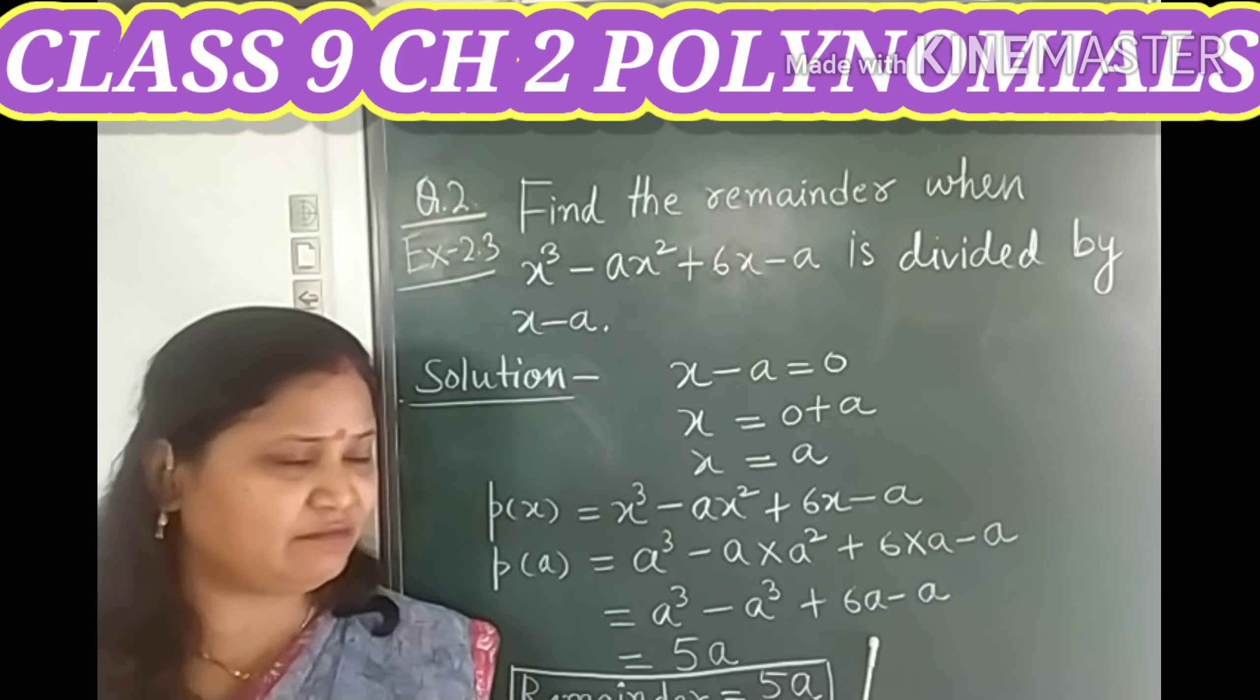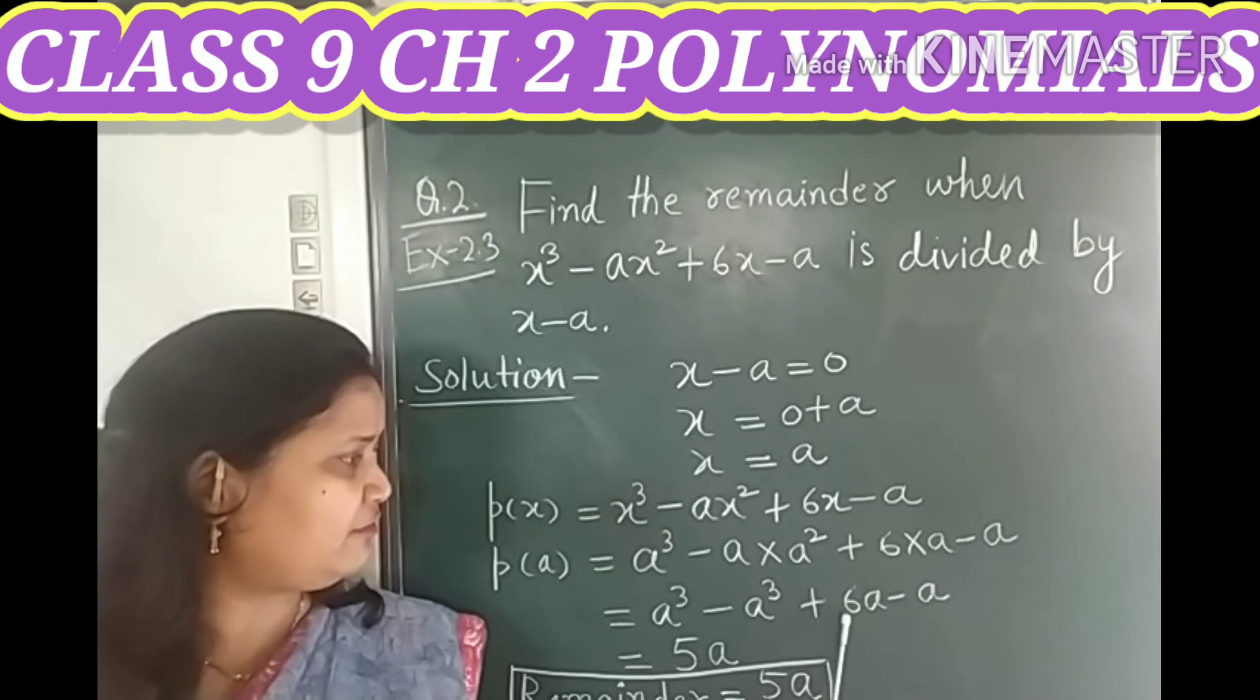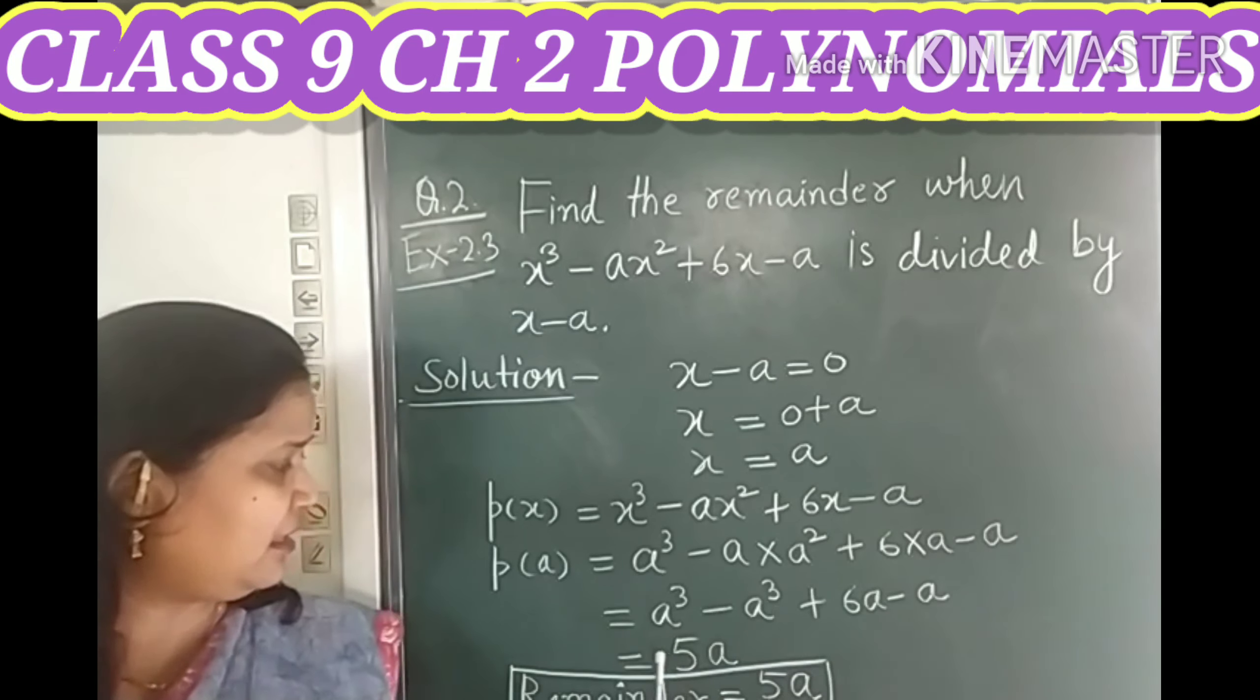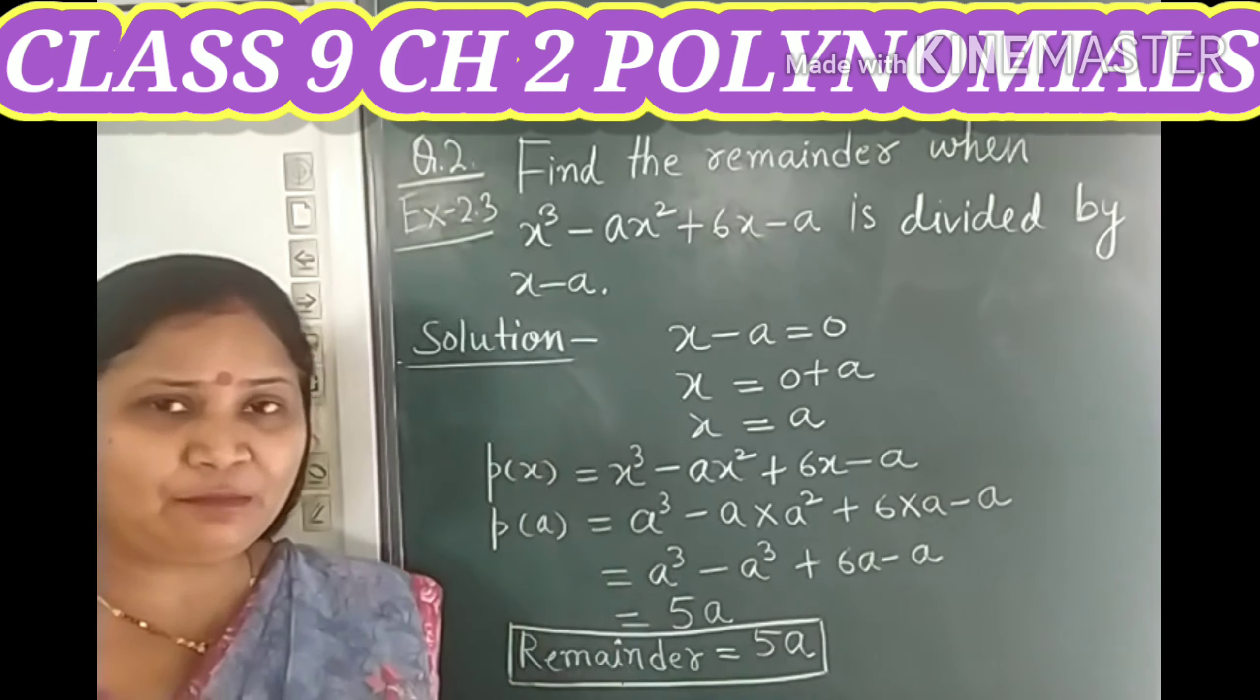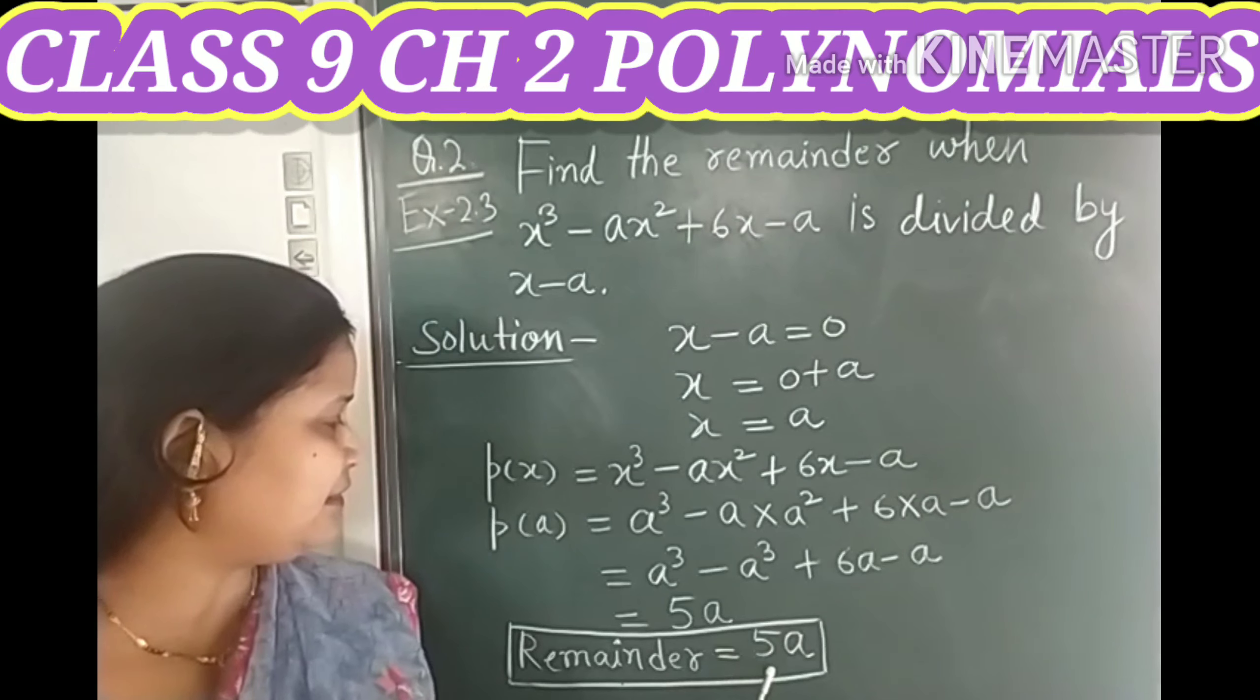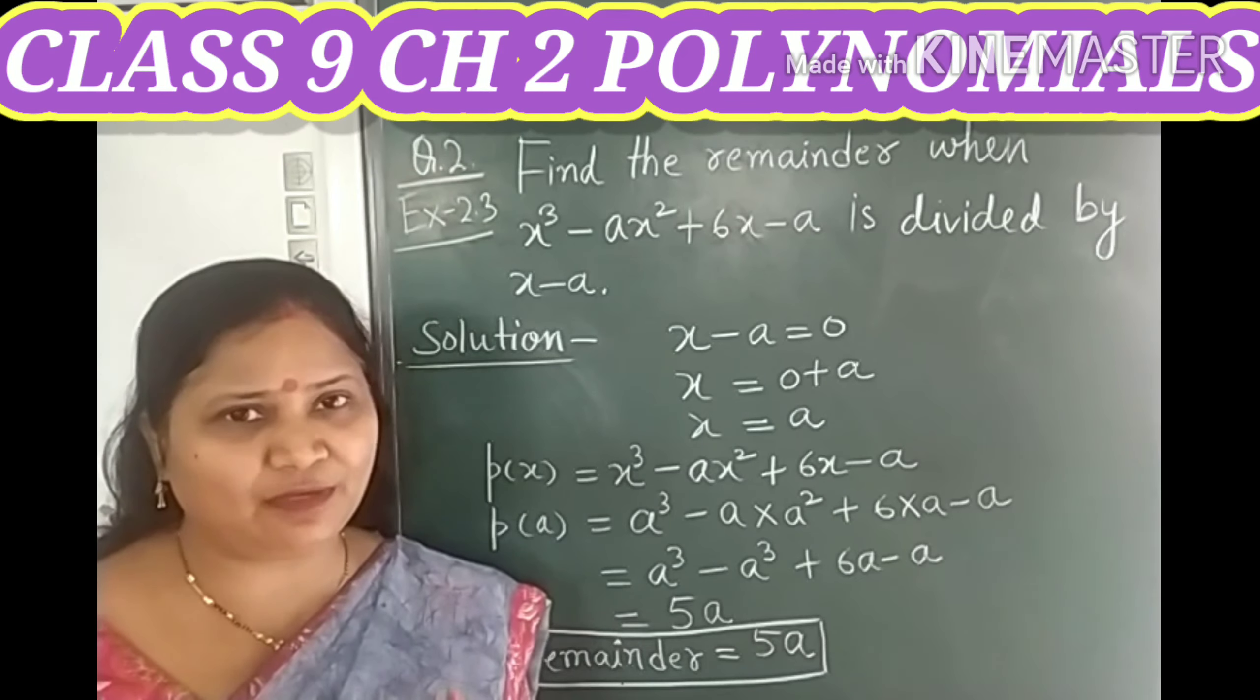So when you subtract a from 6a, you get 5a. So children, if we divide these two given polynomials, the required remainder is 5a. So this is the required solution of given problem.